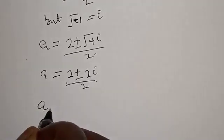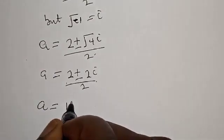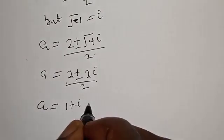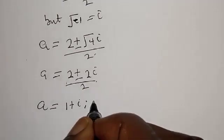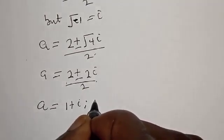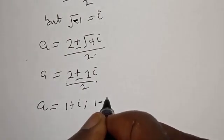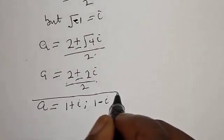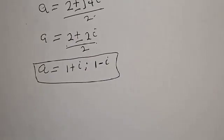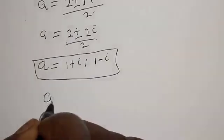Then we have a is equal to 2 plus or minus 2i over 2. Therefore the final answer for the first case is a is equal to 1 plus i or 1 minus i.